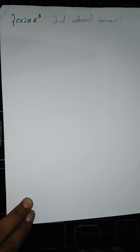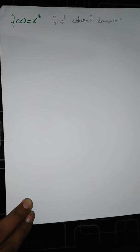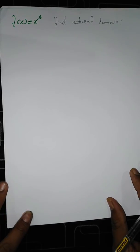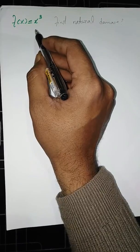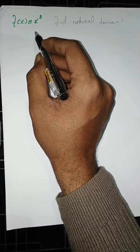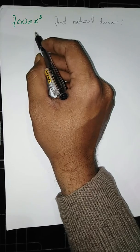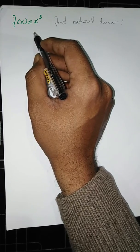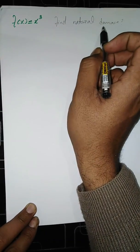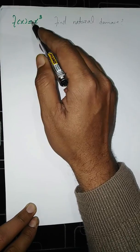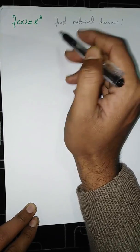Domain means the set of all allowable input values. Our input values should be from the set of real numbers, and allowable means I need to input all those values from the set of real numbers with which my function remains defined. So I have to choose all the values from the set of real numbers that make my function defined.